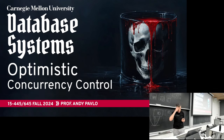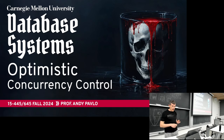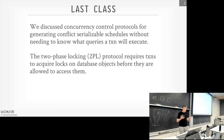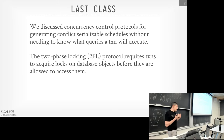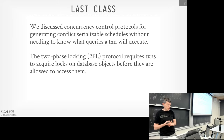Today we're going to continue our discussion on concurrency control protocols. Recall from last class we spent time talking about two-phase locking, and that was a concurrency protocol we would implement in our database system that would generate conflict-serializable schedules for us without having to know what queries the transactions were going to execute ahead of time, what operations they were going to do, what objects they were going to touch.